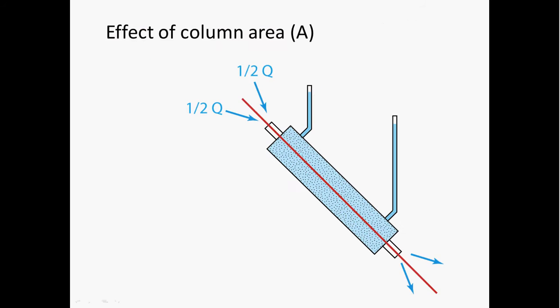How about column area — how would this affect flow? This is really straightforward. If you were to put a partition in the column such that the area available to flow was divided in two, the flow rate through each half of the sand tube would be equal to one half of the total flow. So Darcy concluded that the rate of flow is proportional to the area of sand available.